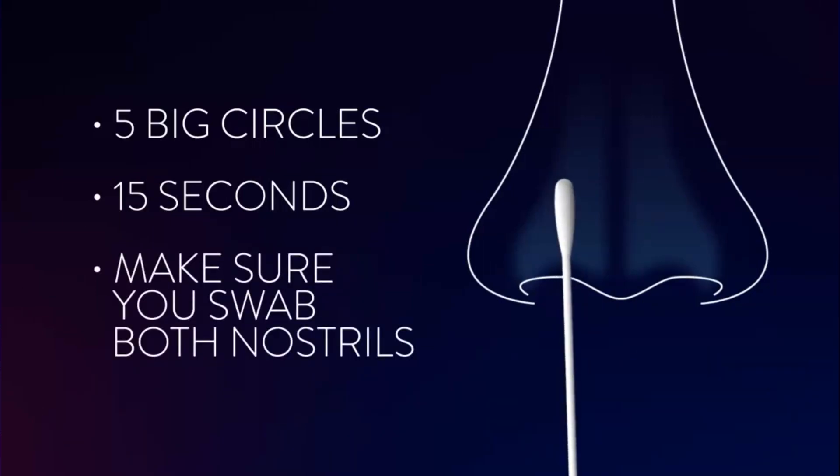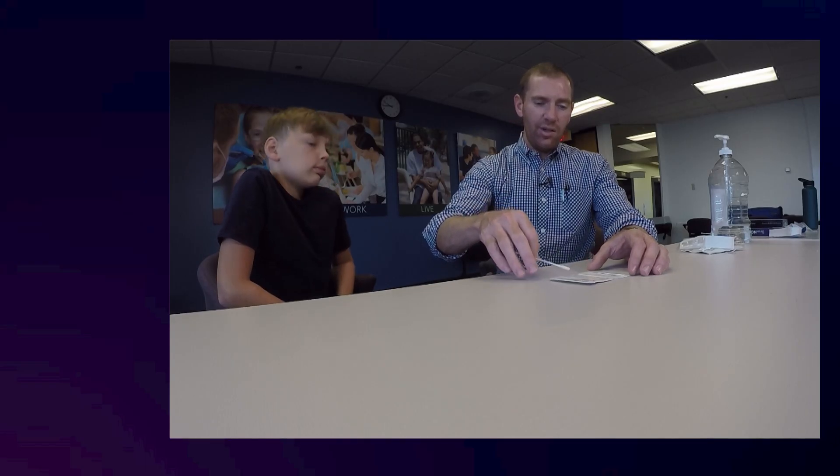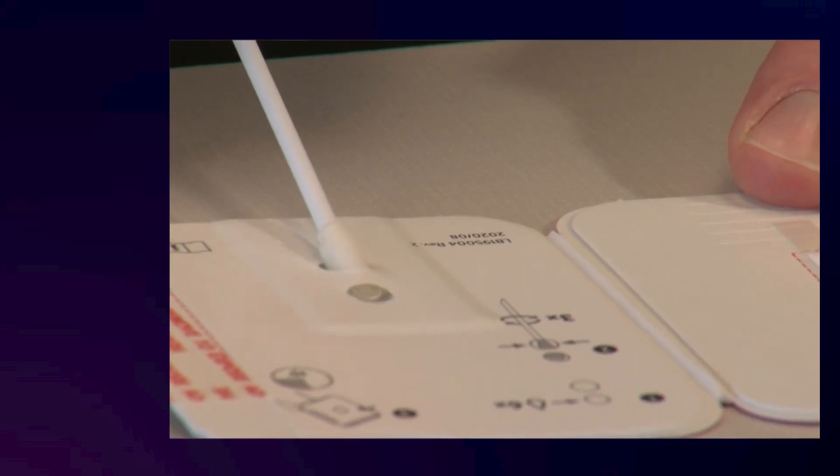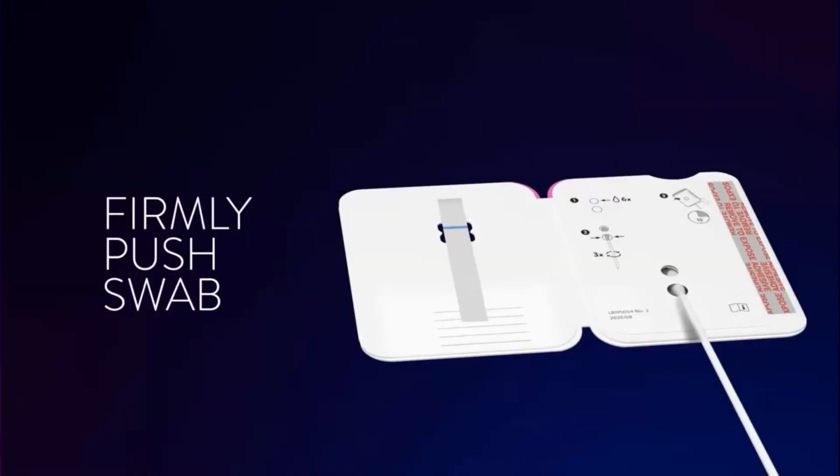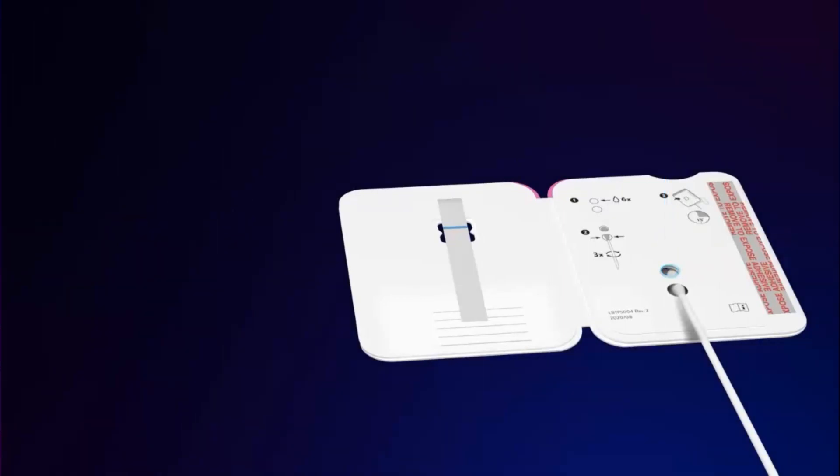Once you've collected the sample on the swab in both nostrils, the swab gets inserted into the lower hole on the card, just until you can see the swab in the top hole there. Then you're going to spin the swab in the hole to mix the swab with the solution.